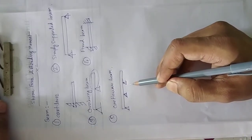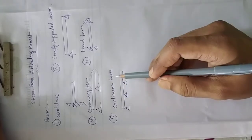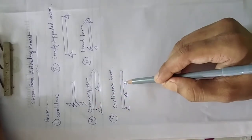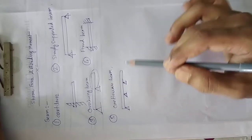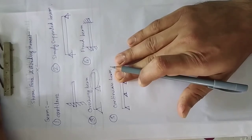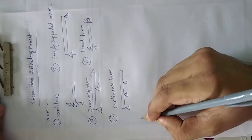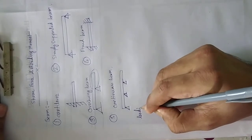So that's why it is called overhang continuous beam. If it is only up to the supports, then it will be called continuous beam. Okay, now we will learn different types of loading.